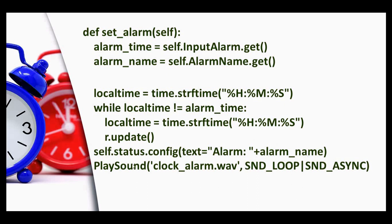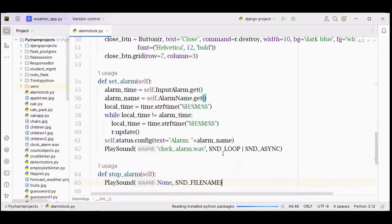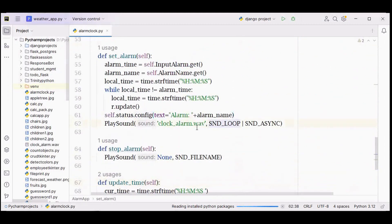We are using PlaySound method of winsound module. PlaySound method takes two arguments. The first argument is the file name - it should be only wave files. Here clock_alarm.wav file - I have just downloaded this wave file. Note that I have placed this clock_alarm.wav in the same location where this alarm clock Python file is placed.